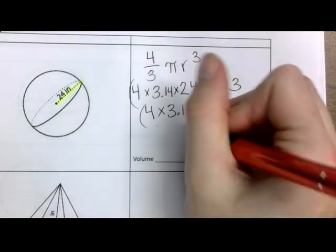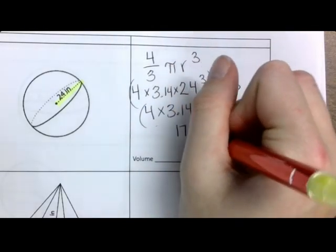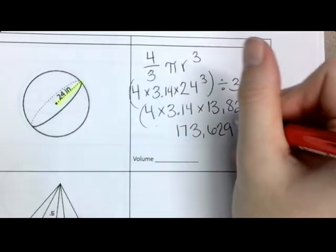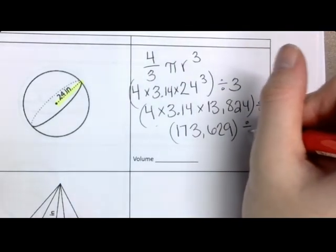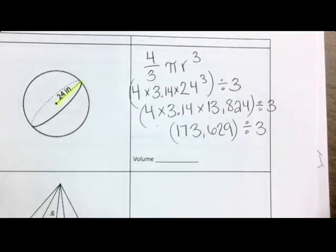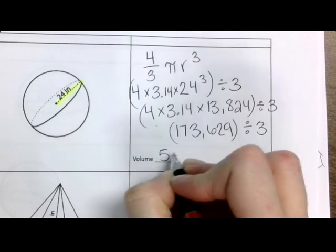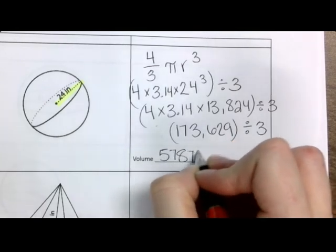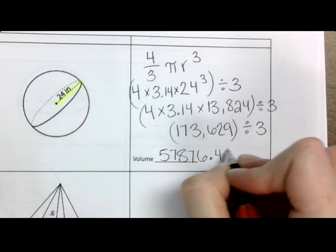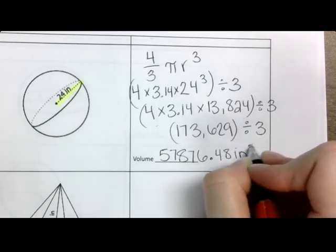When you do that, you get 173,629. I want you then to divide that big honking number by 3. That gives you a final volume of 57,876 and 40 hundredths inches cubed.